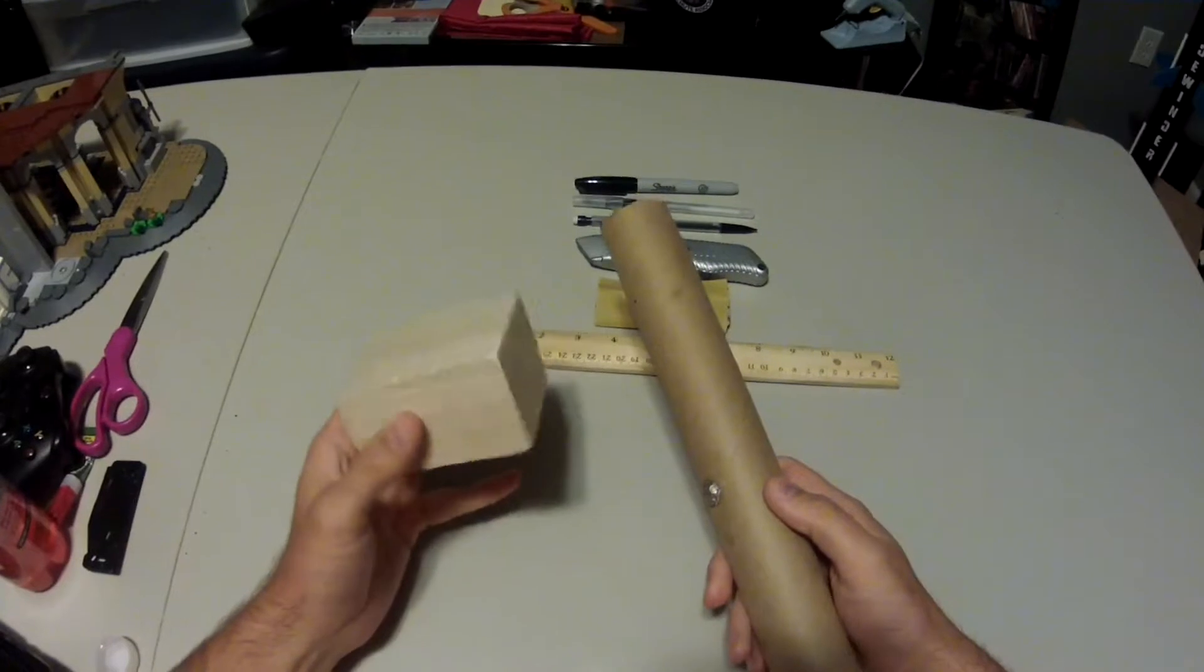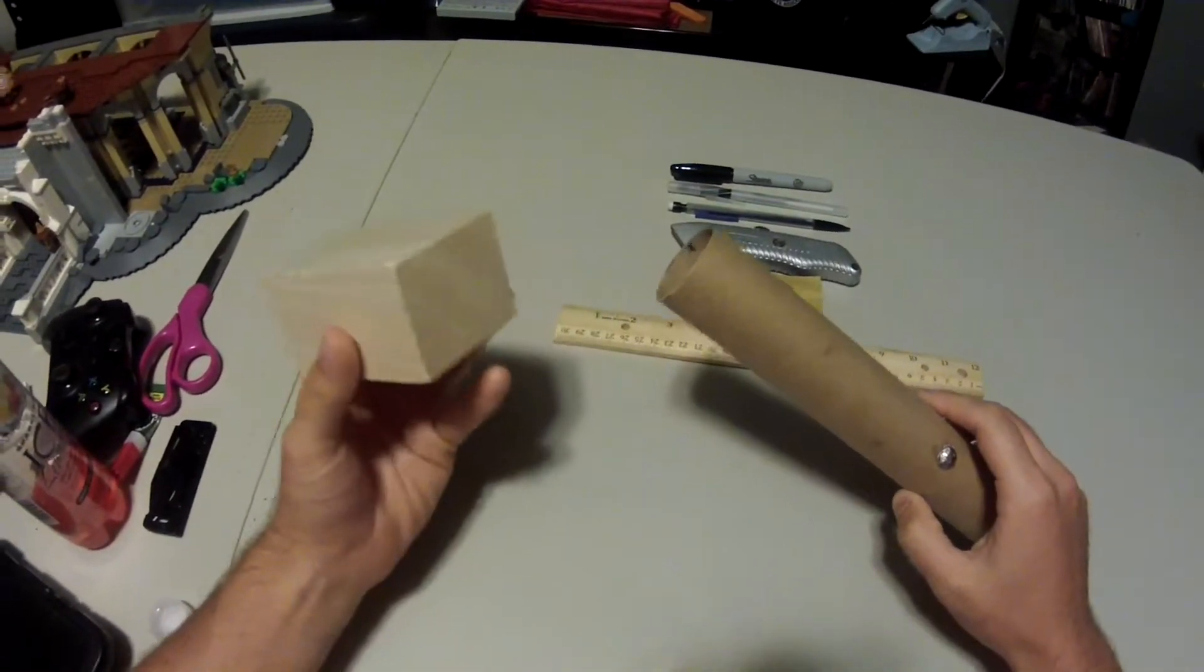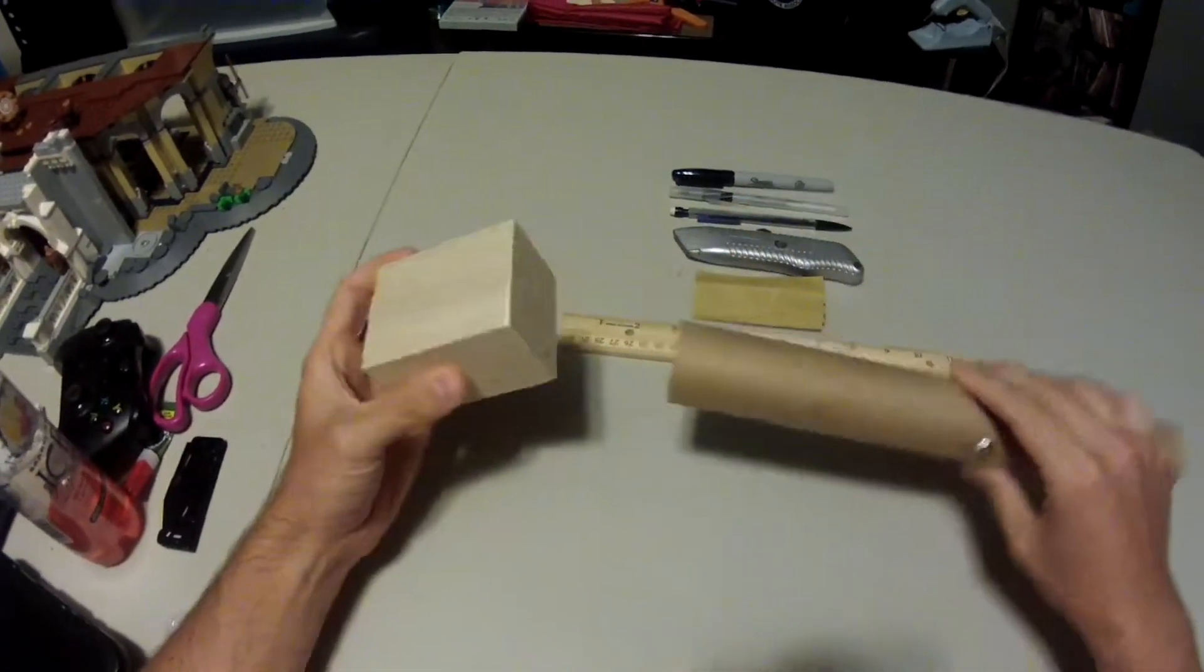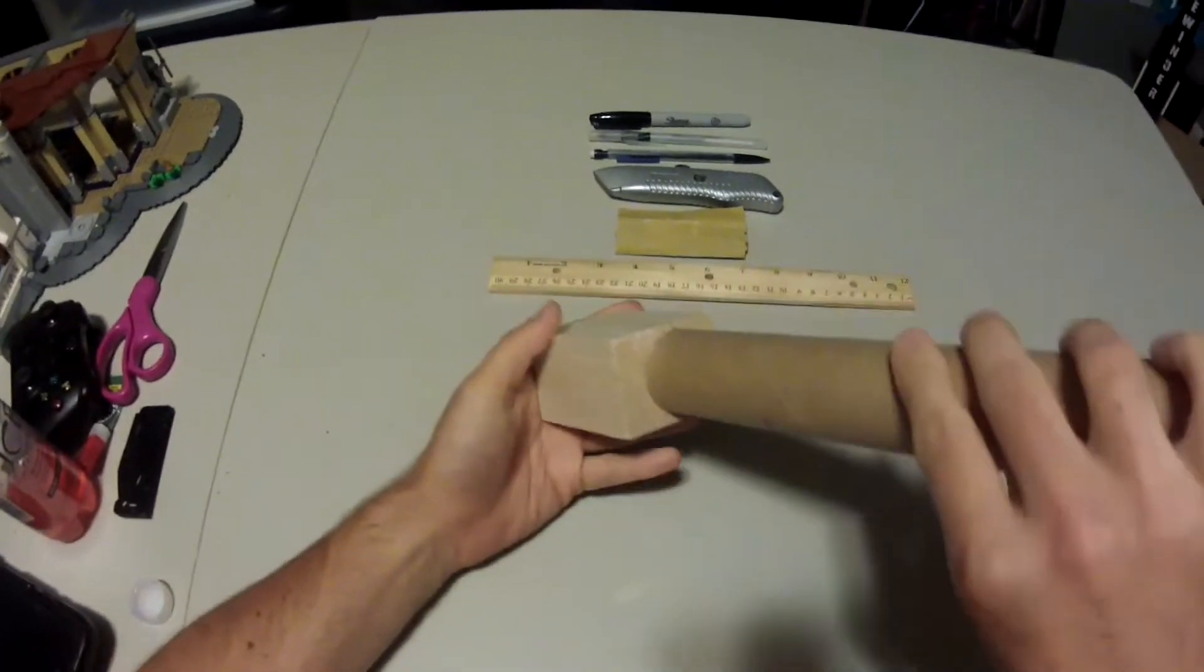To do this, you'll want your block of balsa wood, and you'll want to make sure that it overlaps the diameter of your rocket tube. You don't want your balsa wood to be smaller than the diameter of your rocket tube because that won't work out very well.